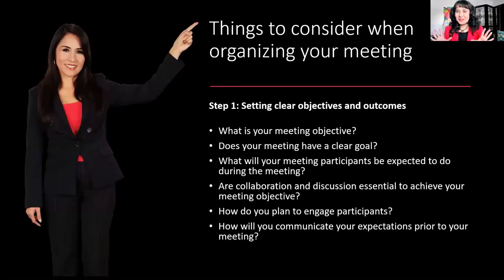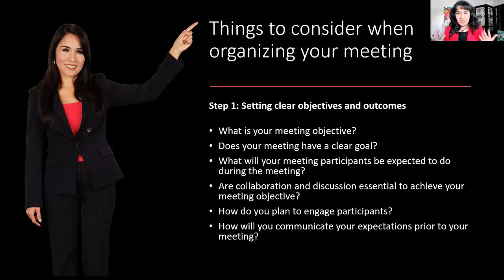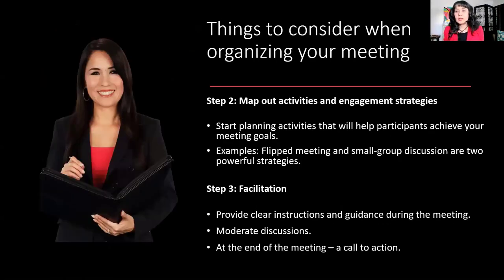As promised, we're going to have a small group discussion in a minute. But first, I have two more slides. Some general tips for organizing meetings: step one is setting clear objectives and outcomes. As you're scheduling and preparing your meeting, it's important to ask: what is the goal? What do I want to achieve? Is open discussion among participants important for this meeting? Based on that, you plan your activities — whether to flip the meeting, do small group discussions, or maybe just send an email instead.